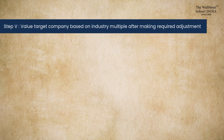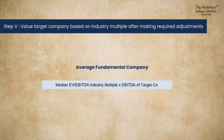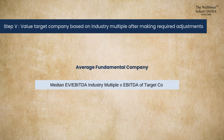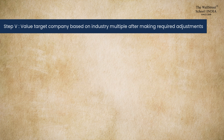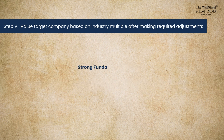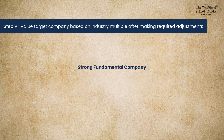In step five, we find the final value of our target company based on the industry benchmark multiples from step four. If the company has average fundamentals, apply the median multiple. If it has weak fundamentals, apply the 25th percentile multiple. For a strong fundamental company, apply the 75th percentile multiple.